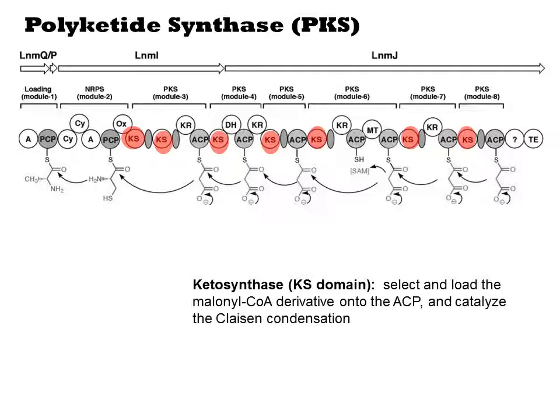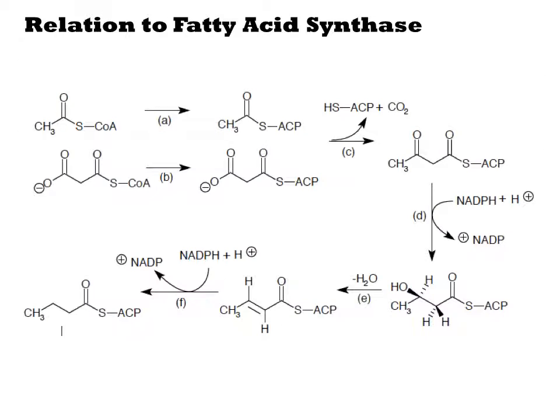Each domain also has a ketosynthase or KS domain. The KS selects the malonyl-CoA derivative and attaches it to the ACP. It also catalyzes the condensation reaction between the growing chain and its chosen malonate. Note that we are doing the exact same chemistry we did before with fatty acid synthase, and with just a KS and an ACP domain, we get to this alpha-keto molecule.